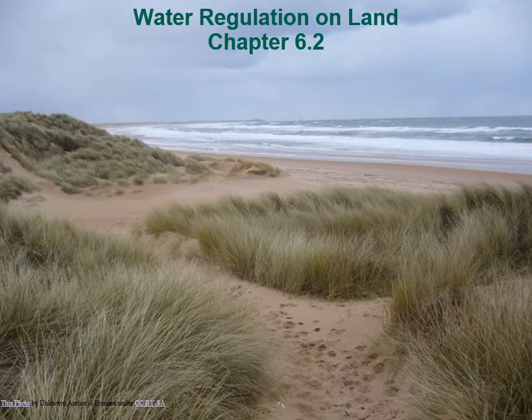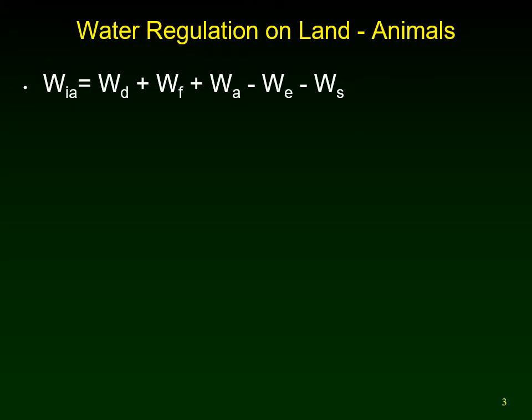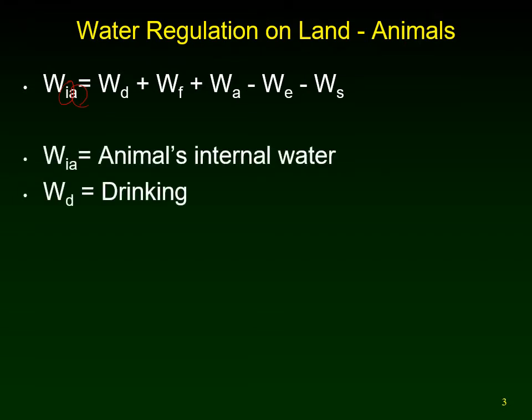So they had to acquire the capacity to regulate their internal water content on land. We look at this in terms of an equation for an animal — the I is for internal and the A is for animals — so we're talking about land animals. Obviously we can add water taken in by drinking.